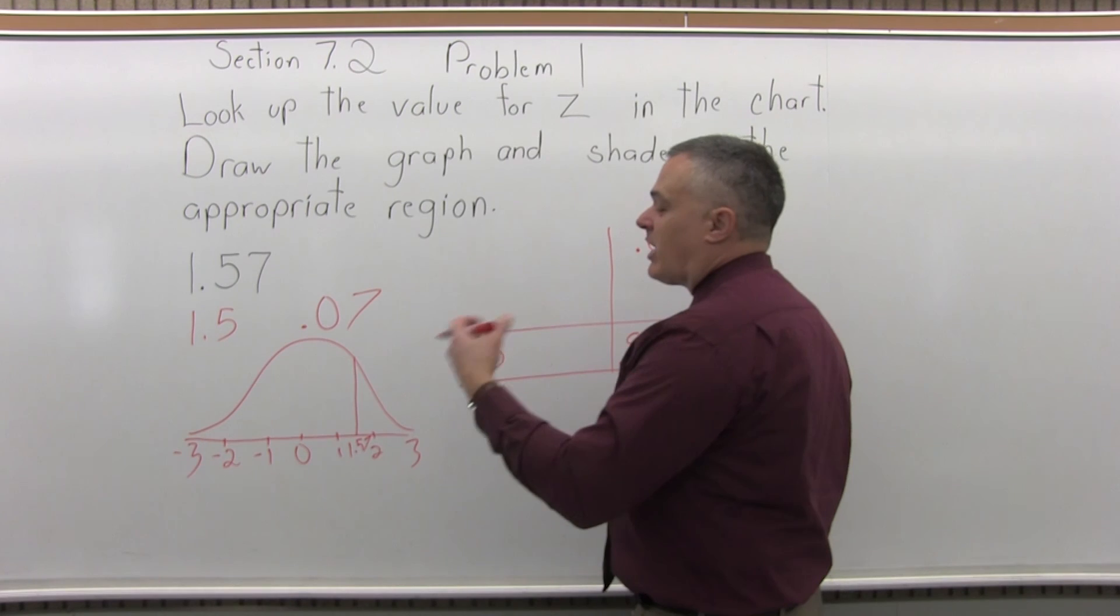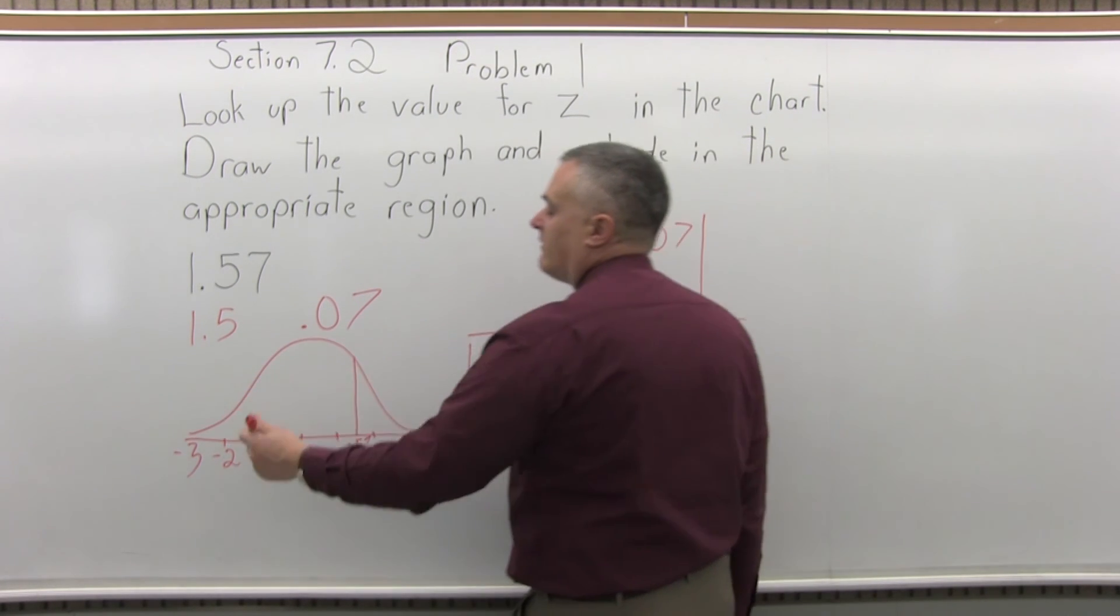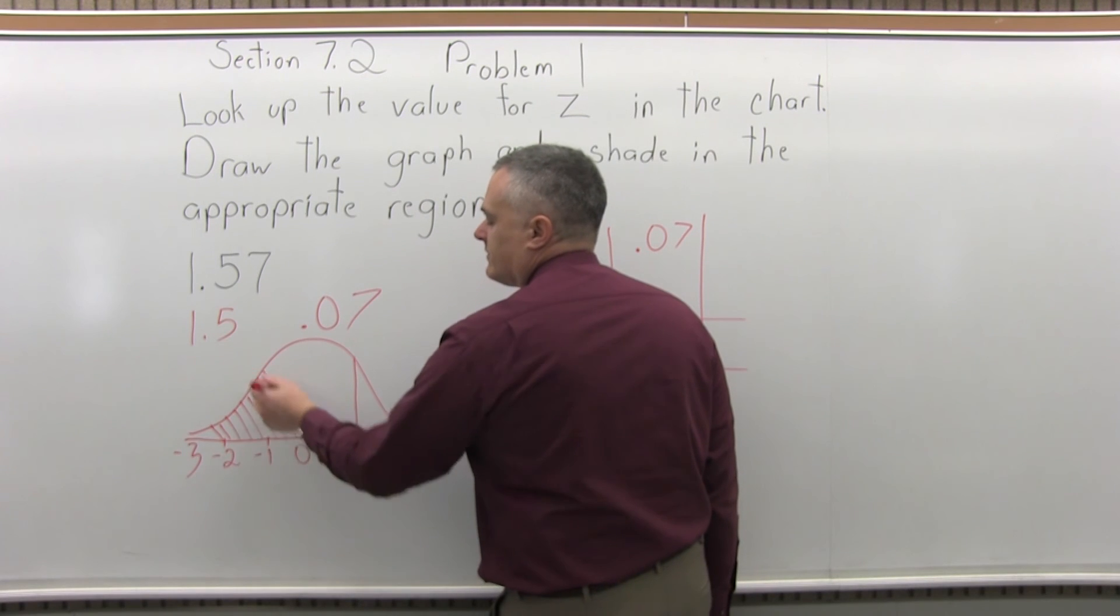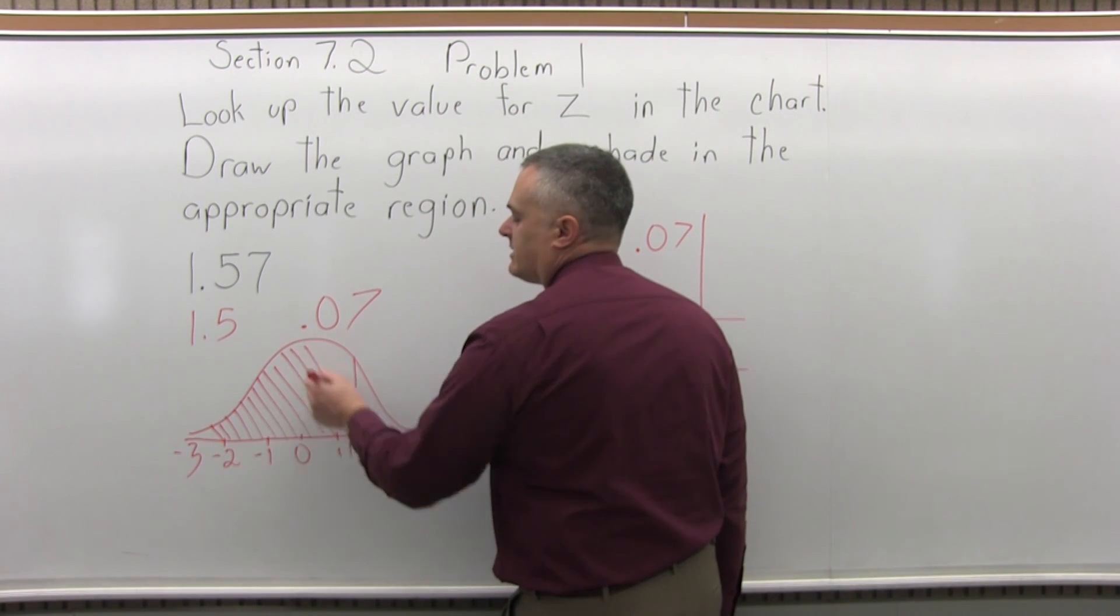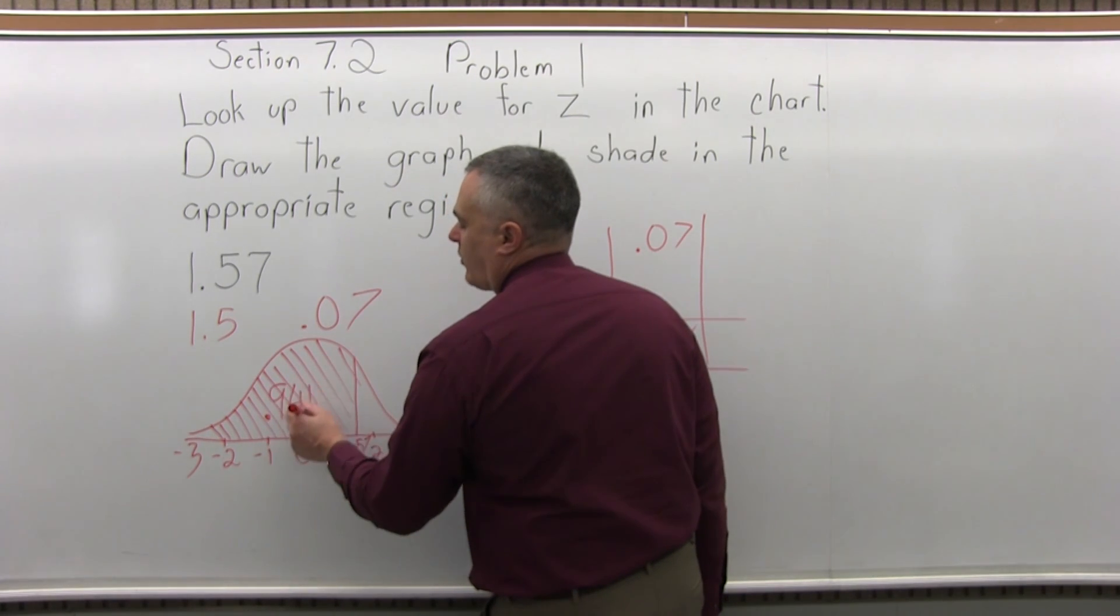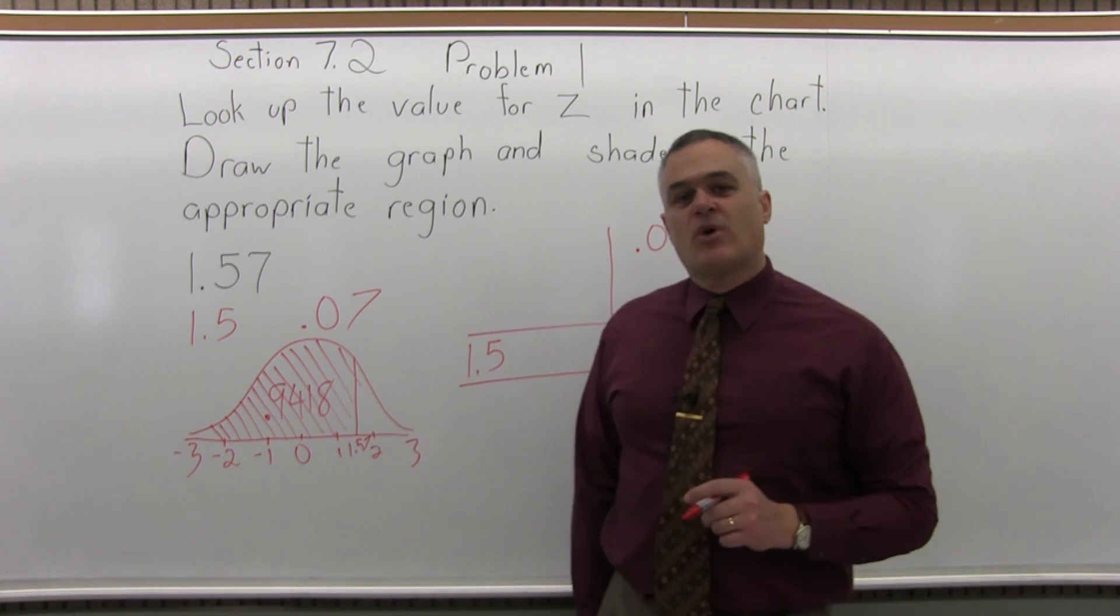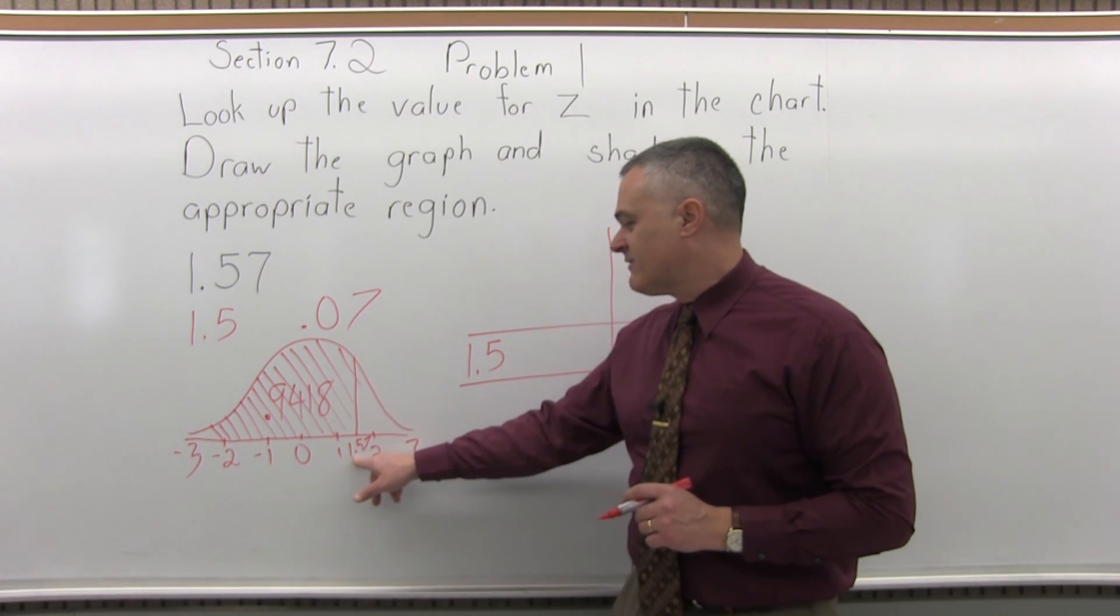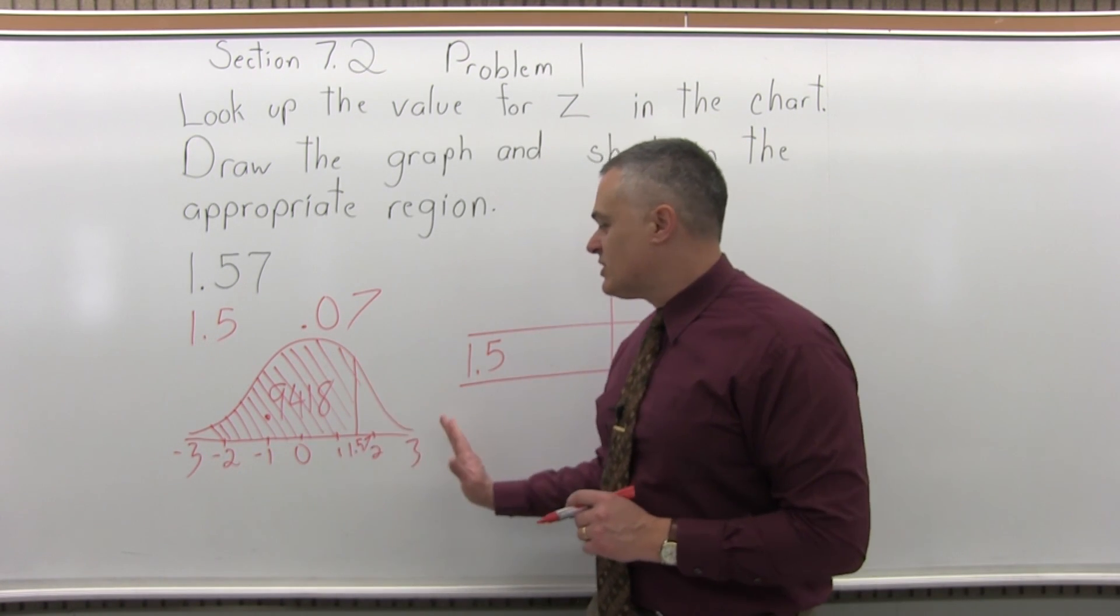Now, the .9418 is the probability of being to the left of the number you looked up. So this area that I'll shade in with these diagonal lines is .9418. So there's about a 94% probability of being in that shaded region, of being 1.57 standard deviations to the right of the mean or less.